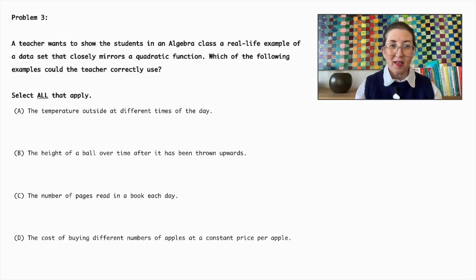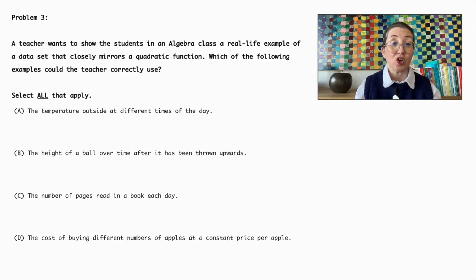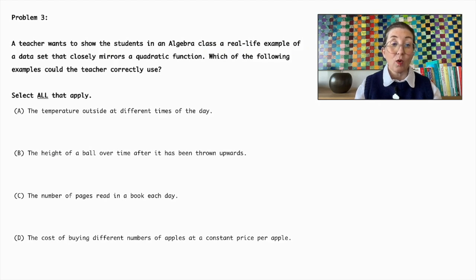Problem number three. A teacher wants to show students in an algebra class a real-life example of a data set that closely mirrors a quadratic function. Which of the following examples could the teacher correctly use? Select all that apply. Option A: The temperature outside at different times of the day. Option B: The height of a ball over time after it has been thrown upwards. Option C: The number of pages read in a book each day. Option D: The cost of buying different numbers of apples at a constant price per apple.